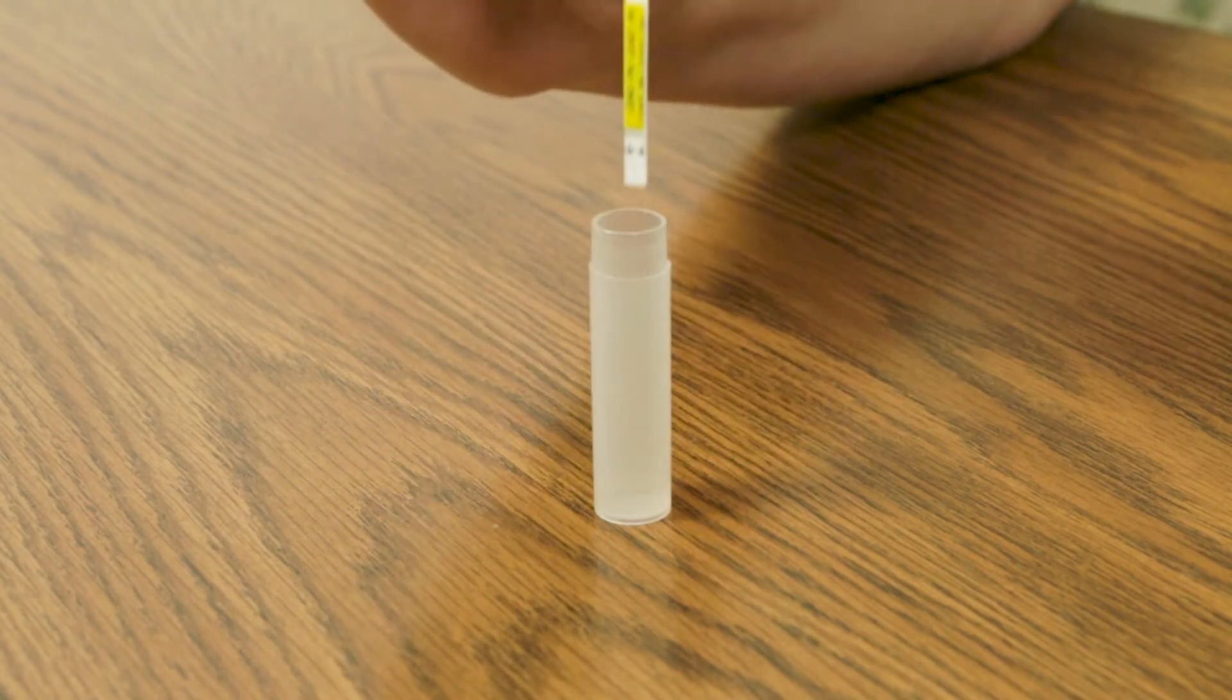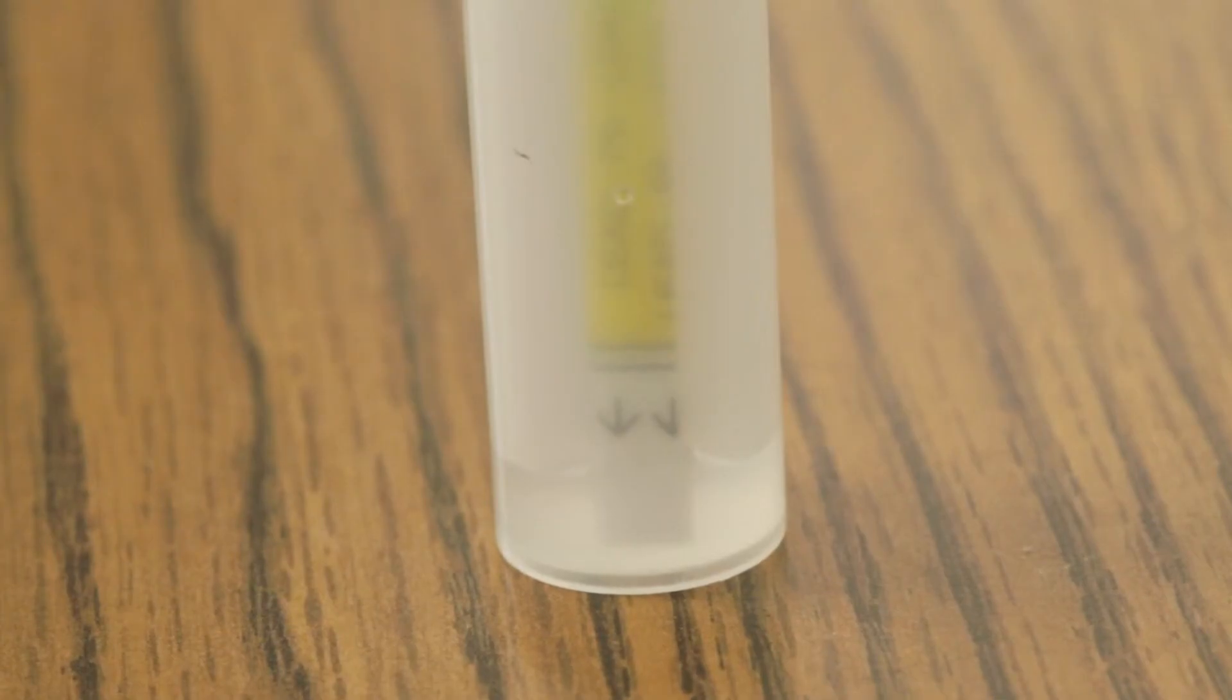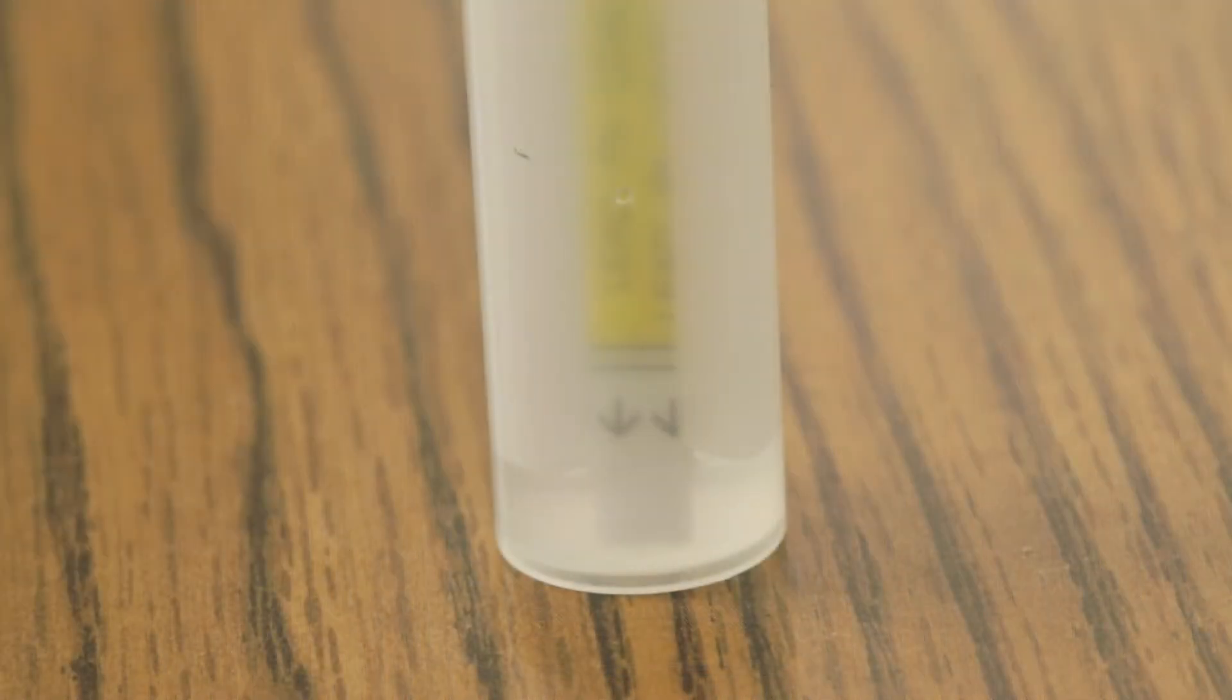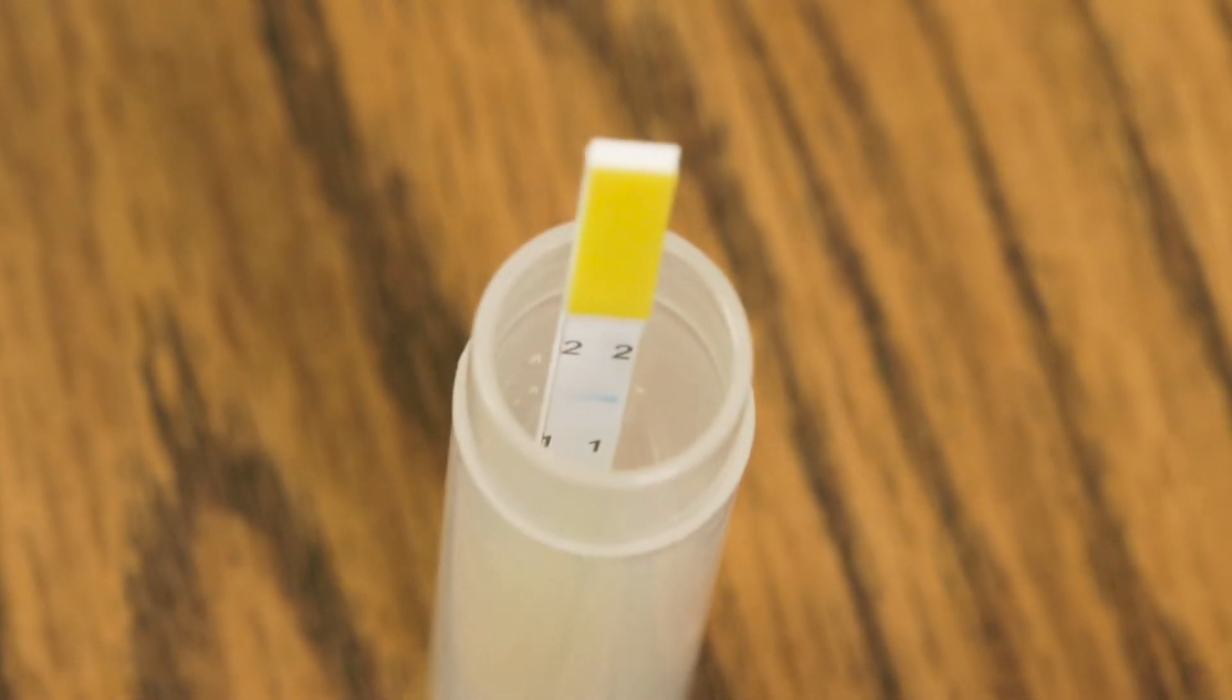Place the test strip into the vial with arrows pointing down. Now wait 10 minutes. Do not disturb the strip or vial during this time. Blue lines will form on the strip as the test develops.